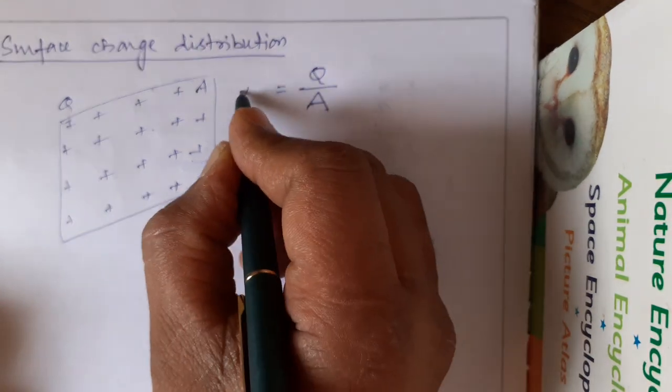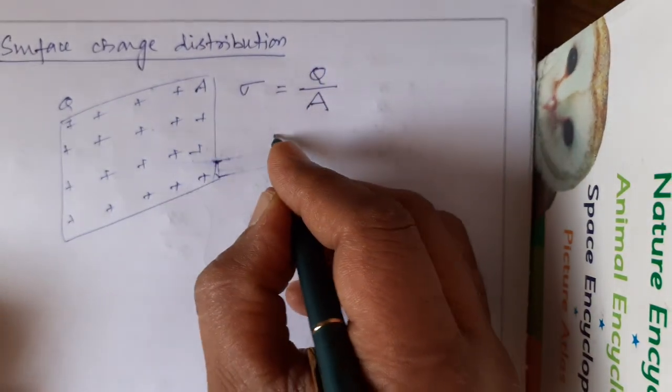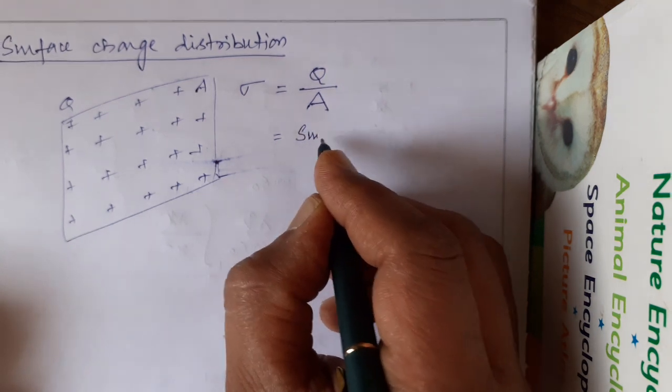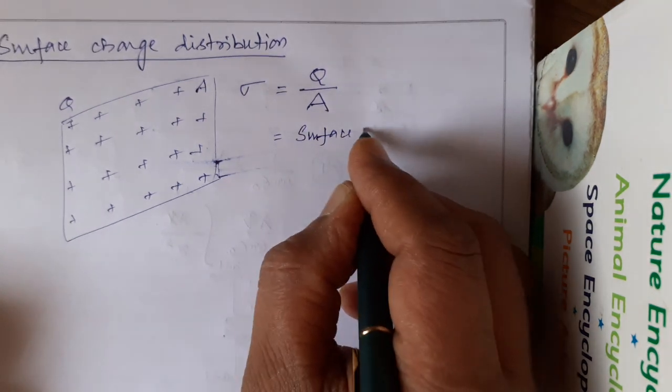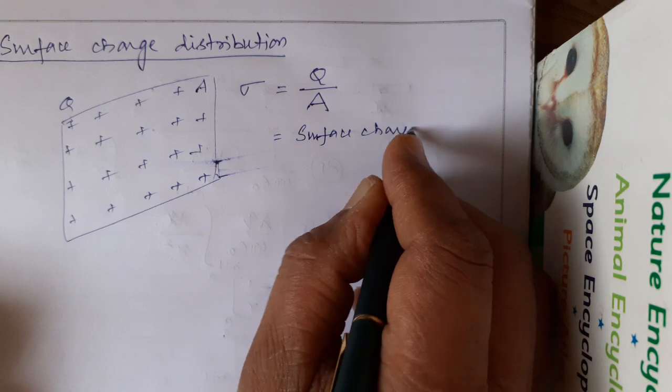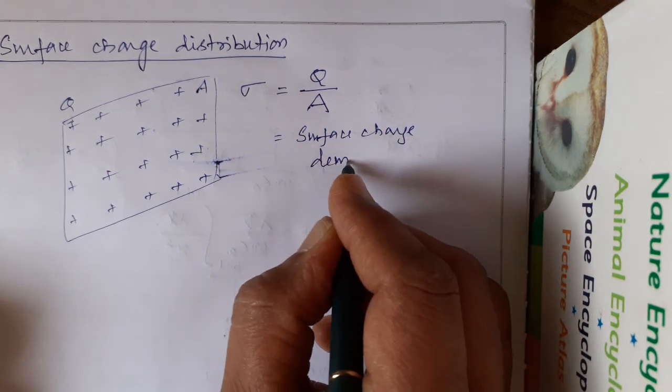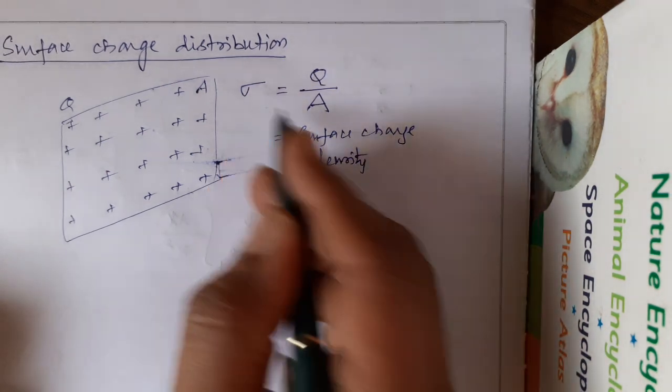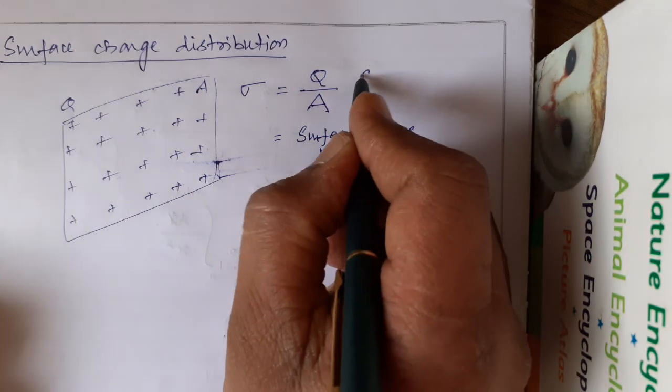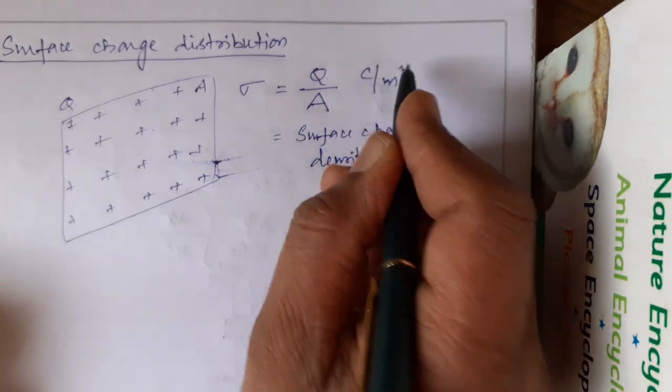So this is known as sigma. This is known as surface charge density or aerial charge density. Sigma means surface charge density. Units are Coulomb per meter square.